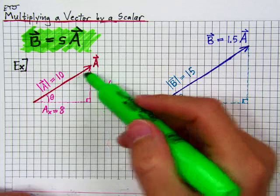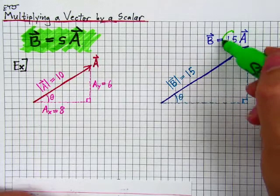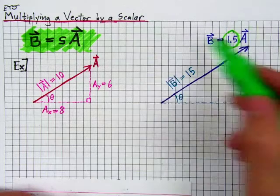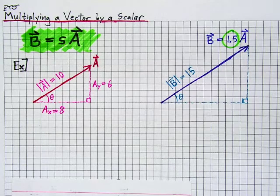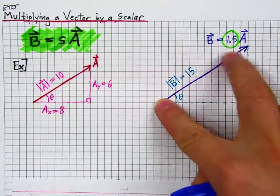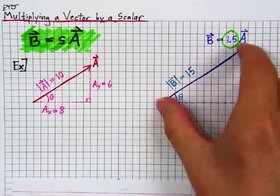what I get is a new vector. Let's call it b. So b equals 1.5 times a, 1.5 is that scalar right there. And what we see is that this scalar effectively scales up vector a.